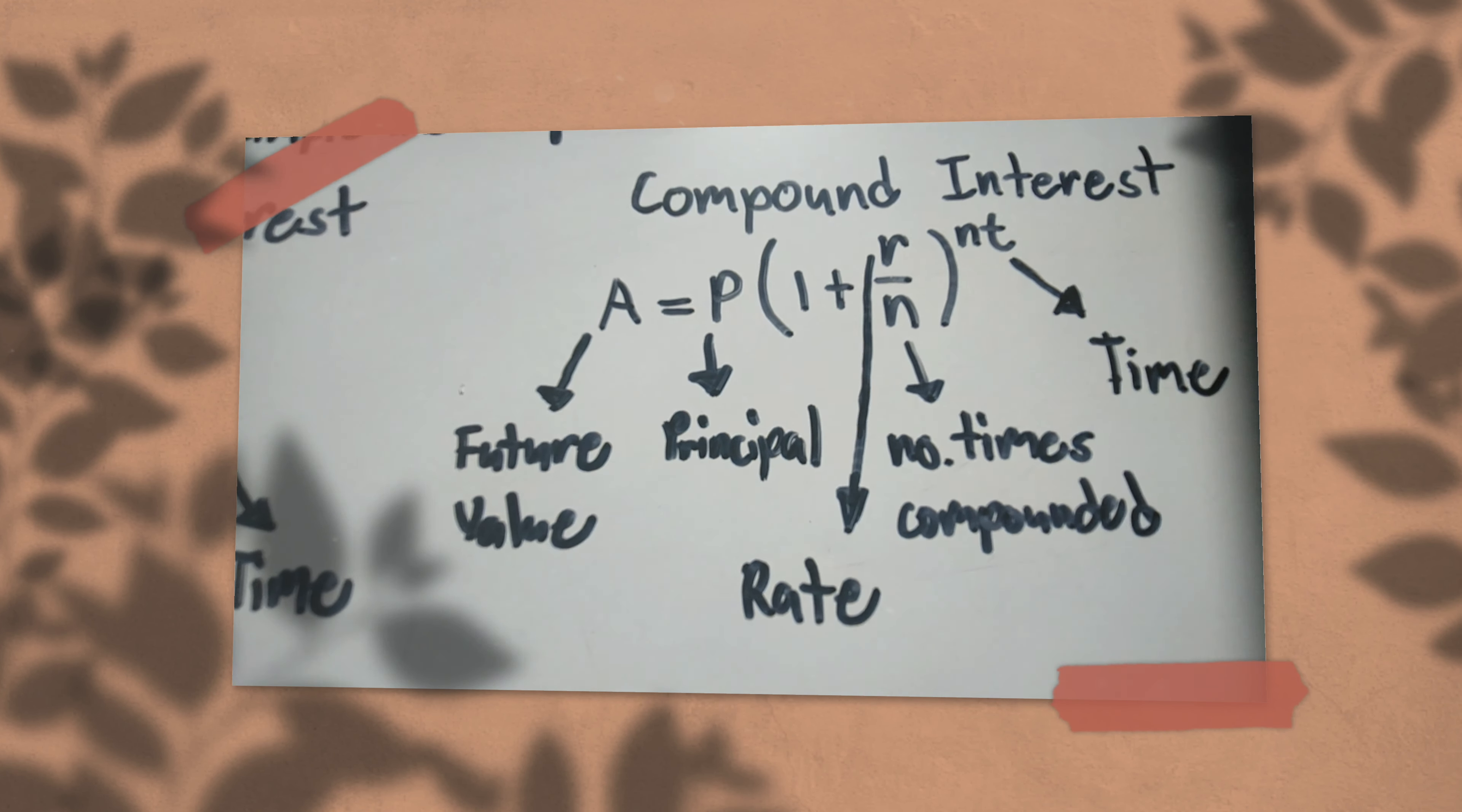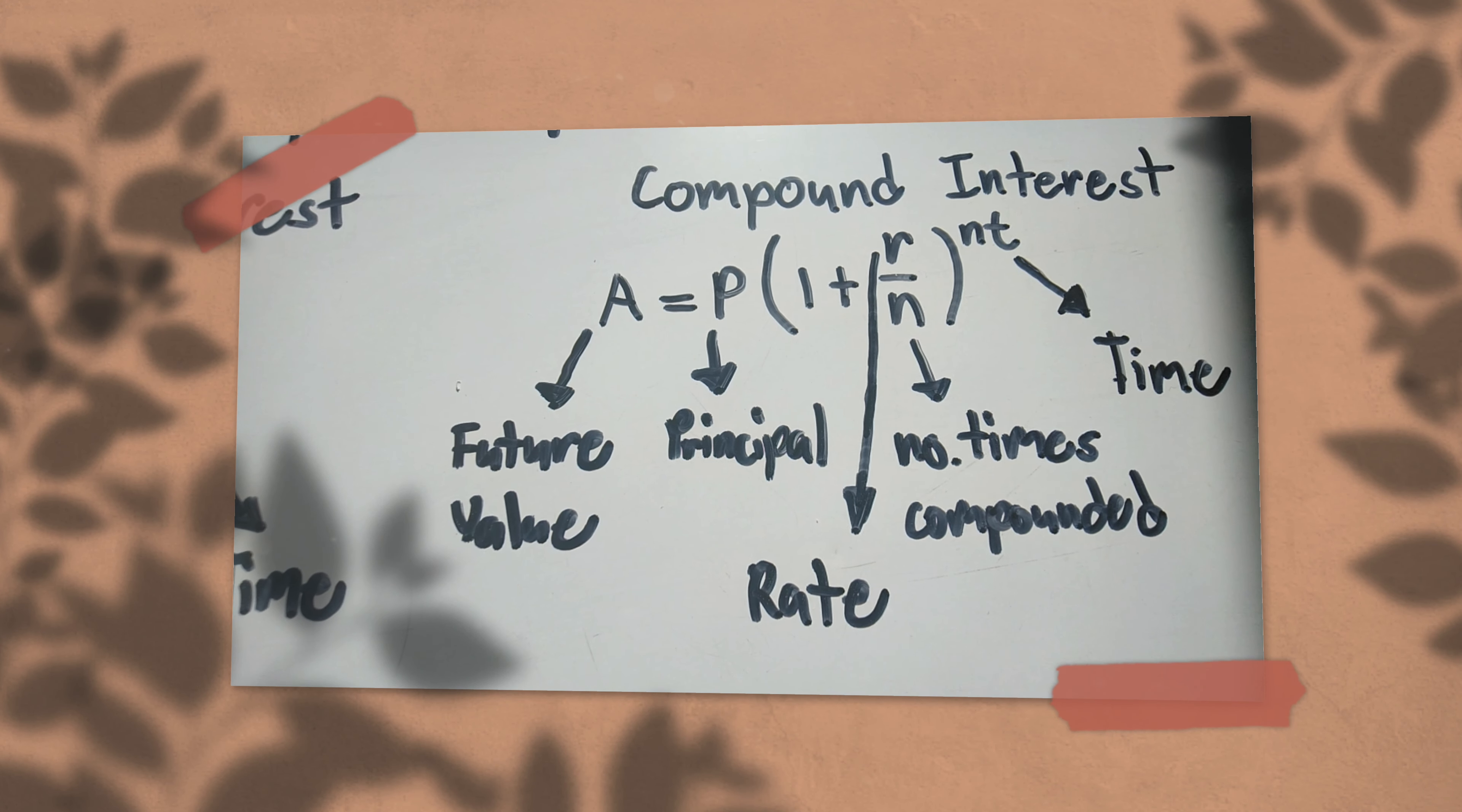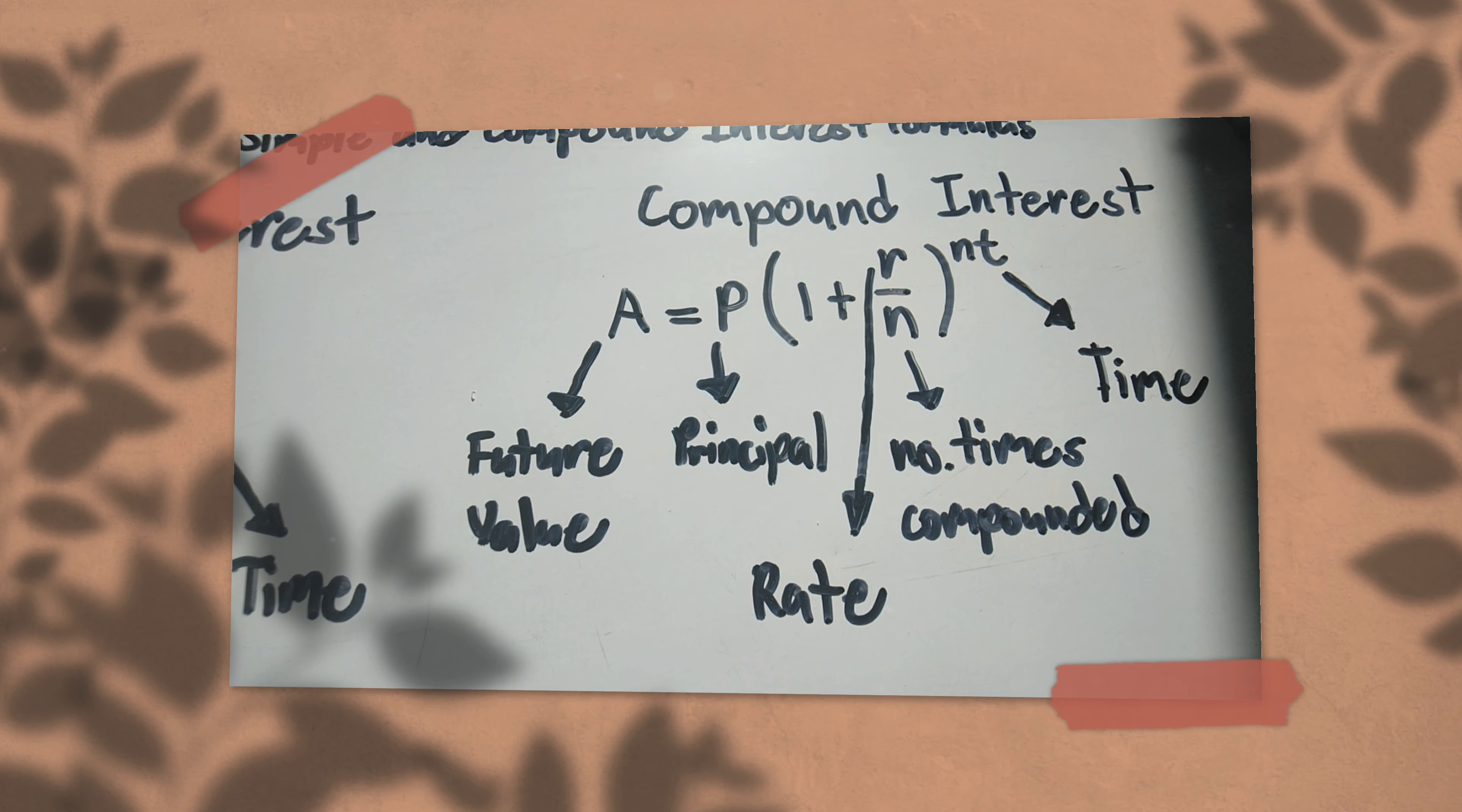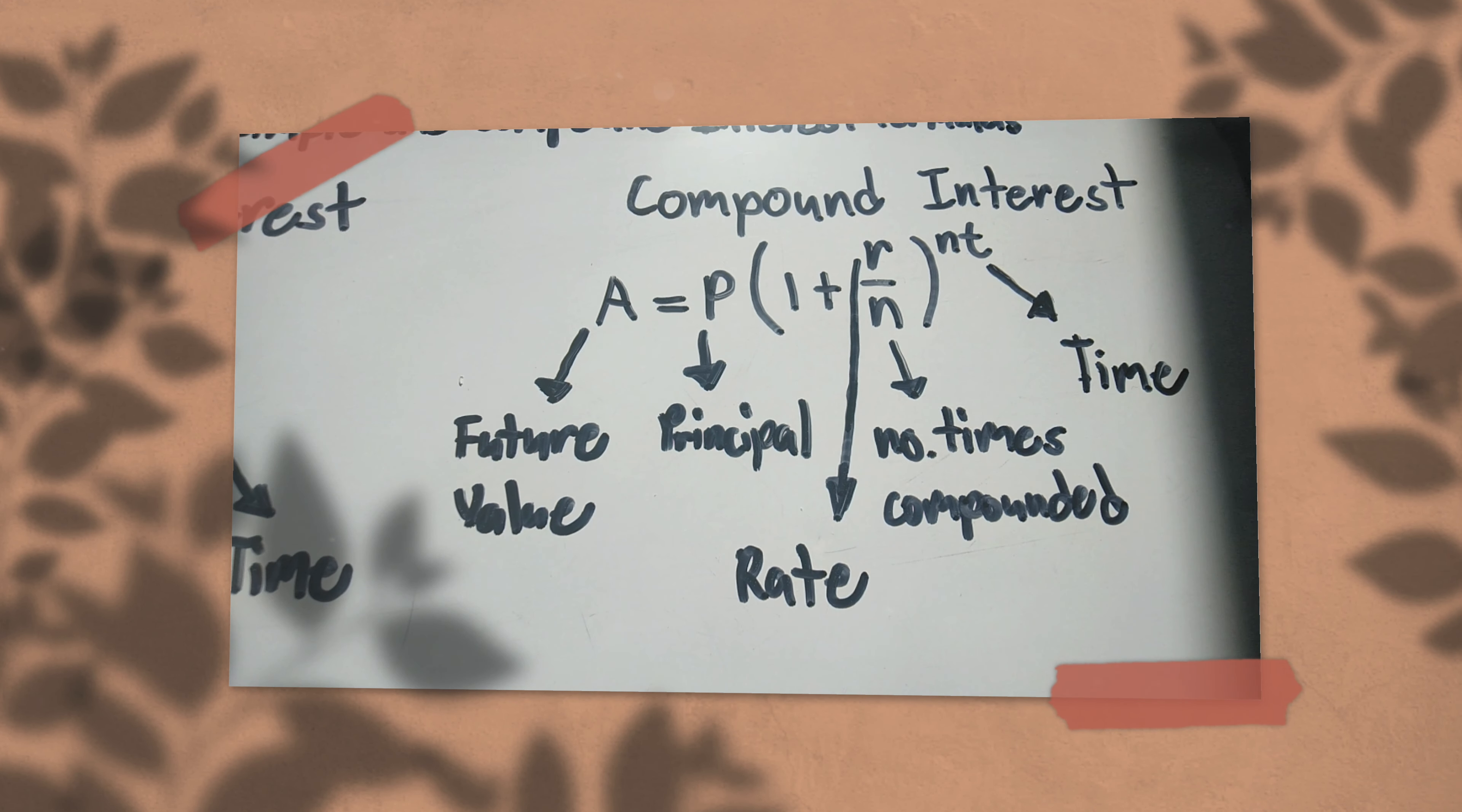For compound interest, there are many formulas because there's future value - this will be its value when you're done with everything. The principal is the money, like if you loaned 100,000, that's your principal.